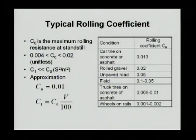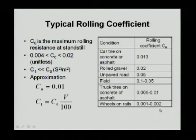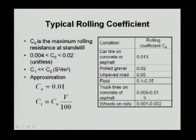For different vehicles and tires, C0 is different. A table lists a few different road conditions. For example, a car tire on concrete or asphalt gives C0 of 0.013, while truck tires on concrete give 0.006. They vary significantly depending on road surface and type of tire.